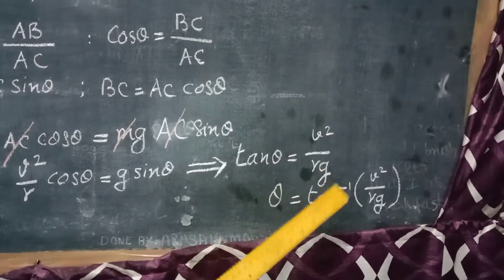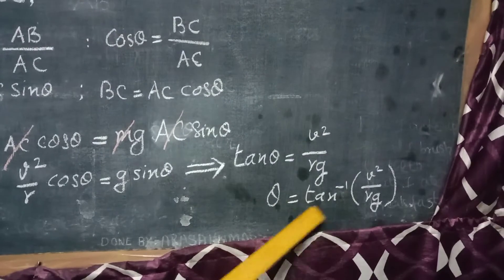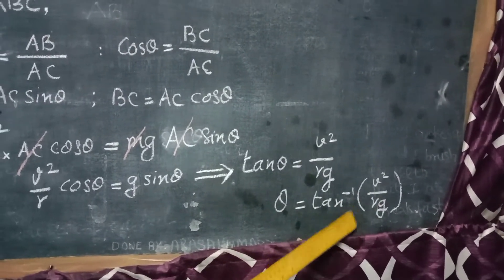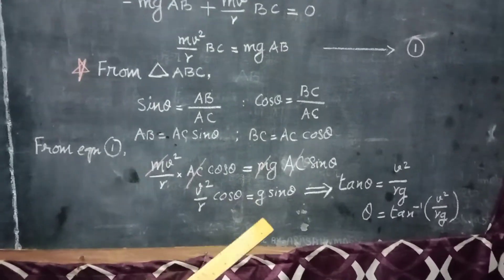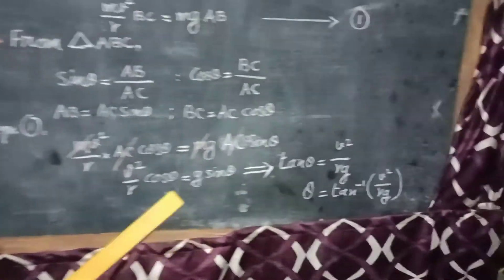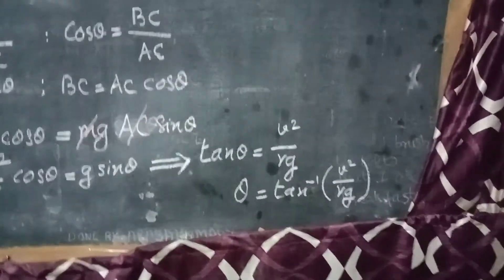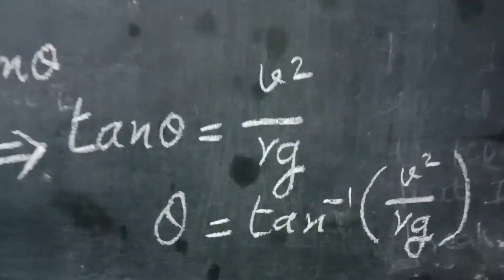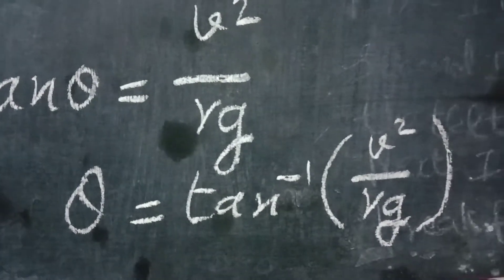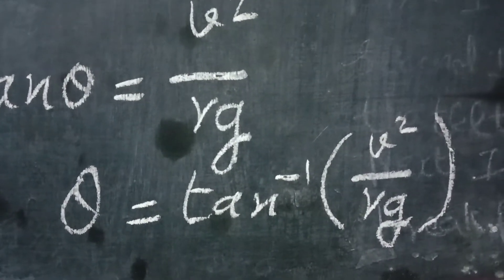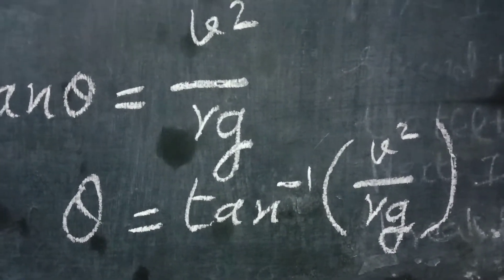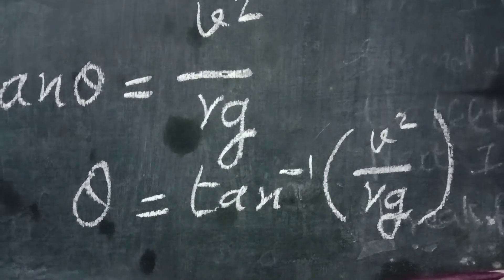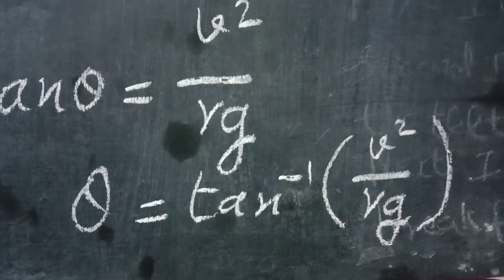Therefore, θ = tan⁻¹(V²/Rg). This shows that while negotiating a circular route of radius R at velocity V, a cyclist has to bend at an angle θ from the vertical to avoid a fall.